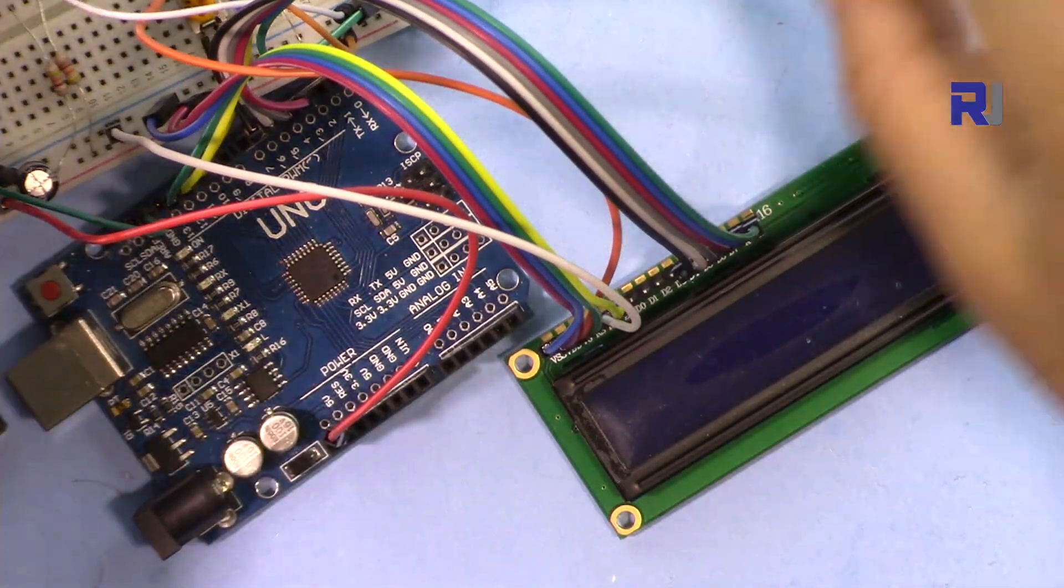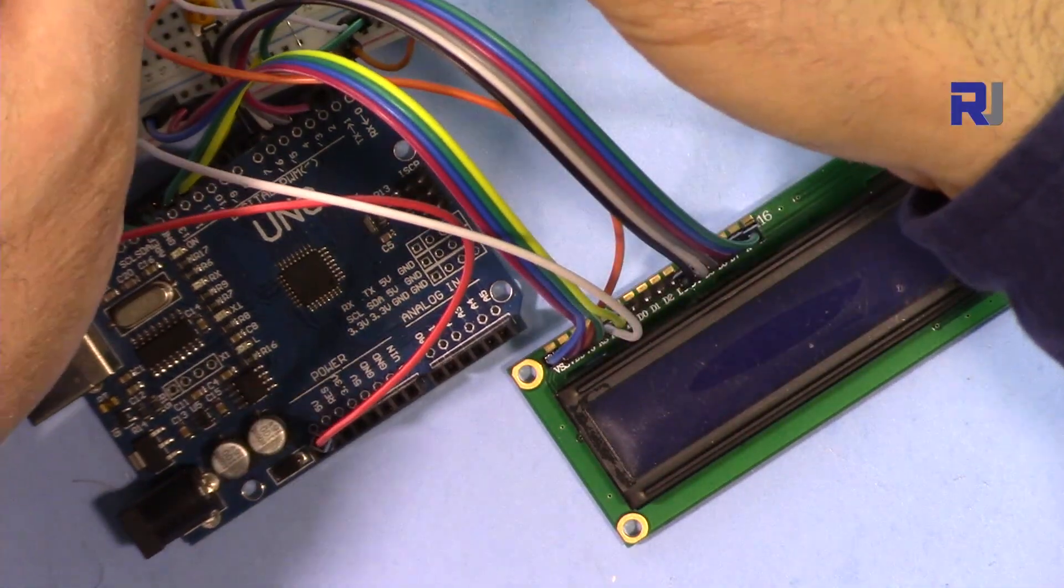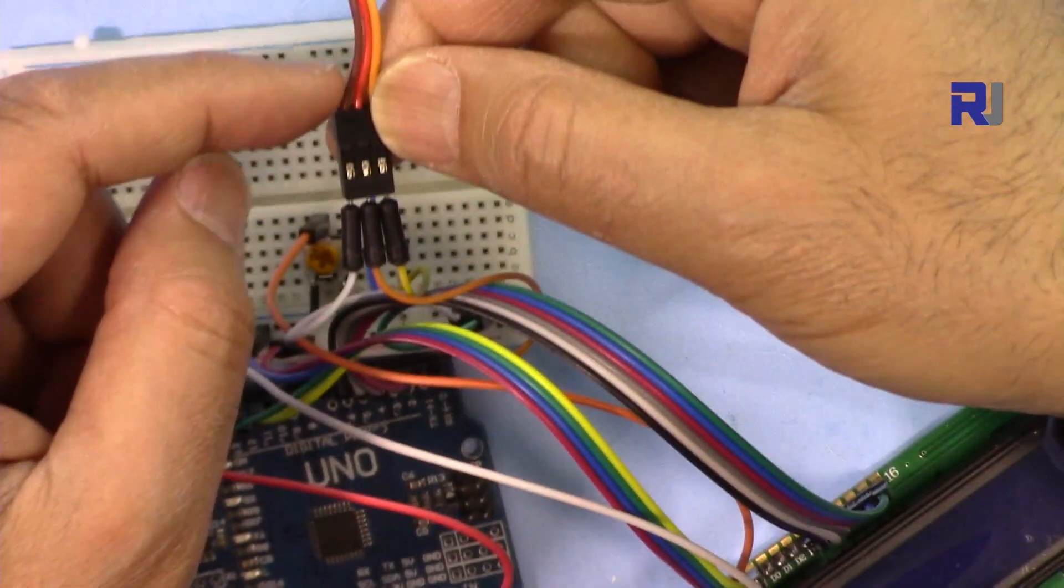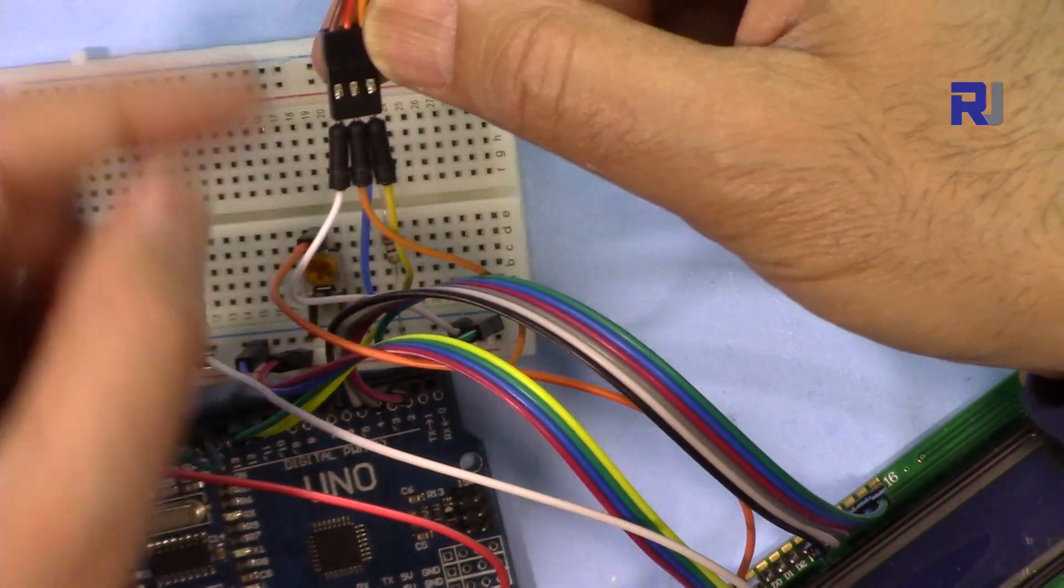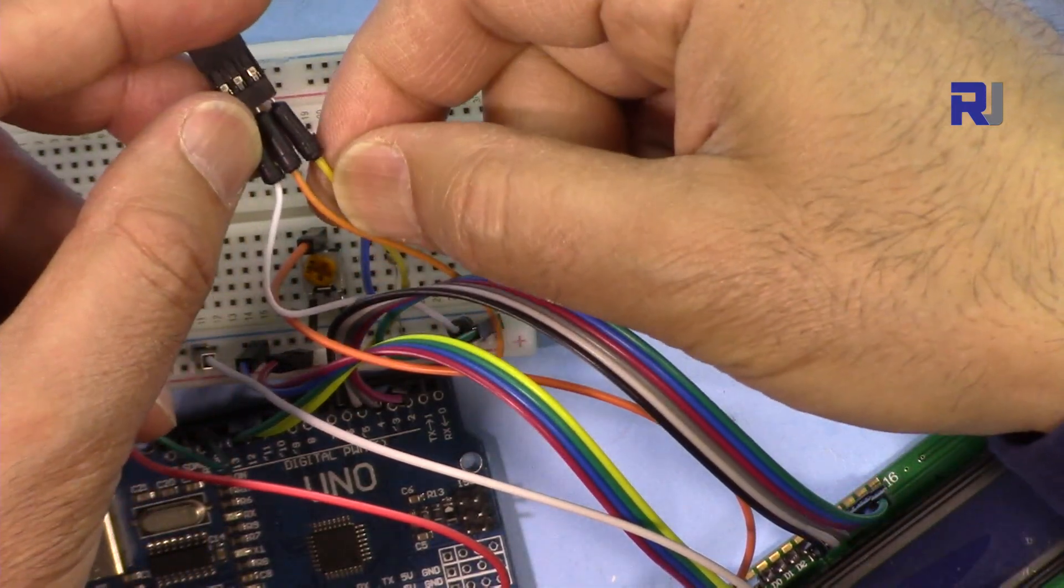The servo has three wires. One of the wires, this darker wire, is connected to the ground. The middle one is connected to 5 volts, and then the right one is connected to pin 9.